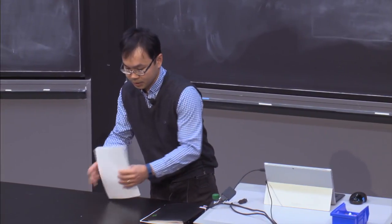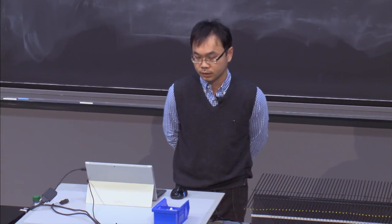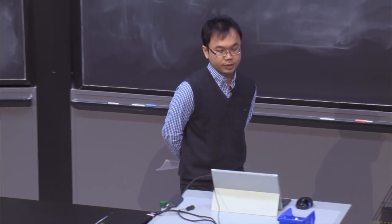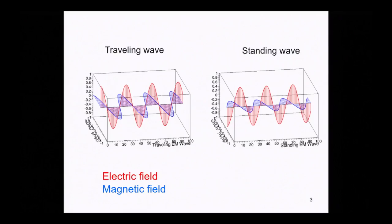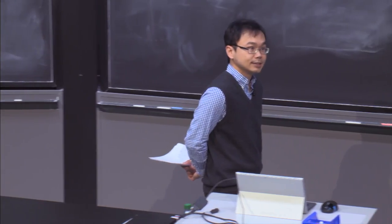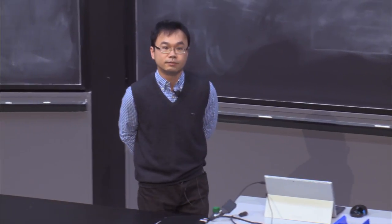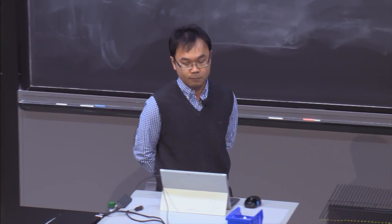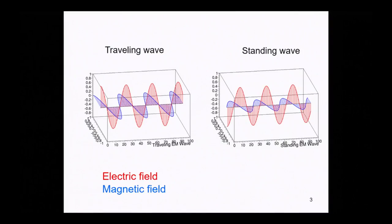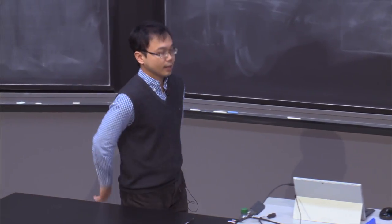Electromagnetic waves are slightly different from the previous two cases — they are three-dimensional waves involving two different field components. We also discussed the traveling wave solution of the electromagnetic waves. The electric field is shown in red and the magnetic field in blue. In a traveling wave, they are in phase and reach maxima simultaneously, whereas in a standing wave there is a phase difference.